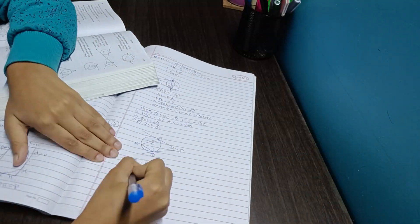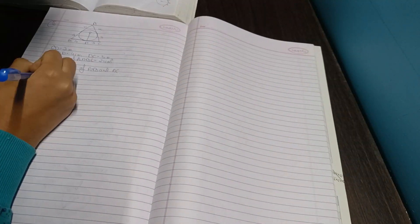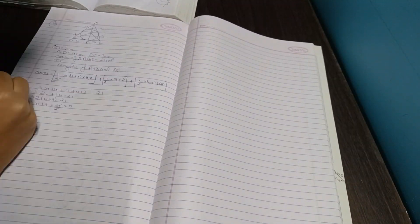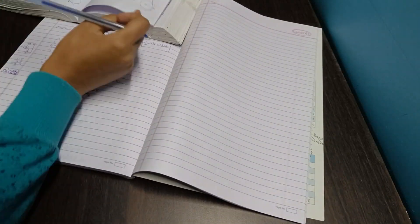Then there are a few minor chapters like real numbers, polynomials, linear equations in two variables, and quadrilaterals. After that I'd be done with my syllabus revision, and then I will start solving the sample papers one by one.